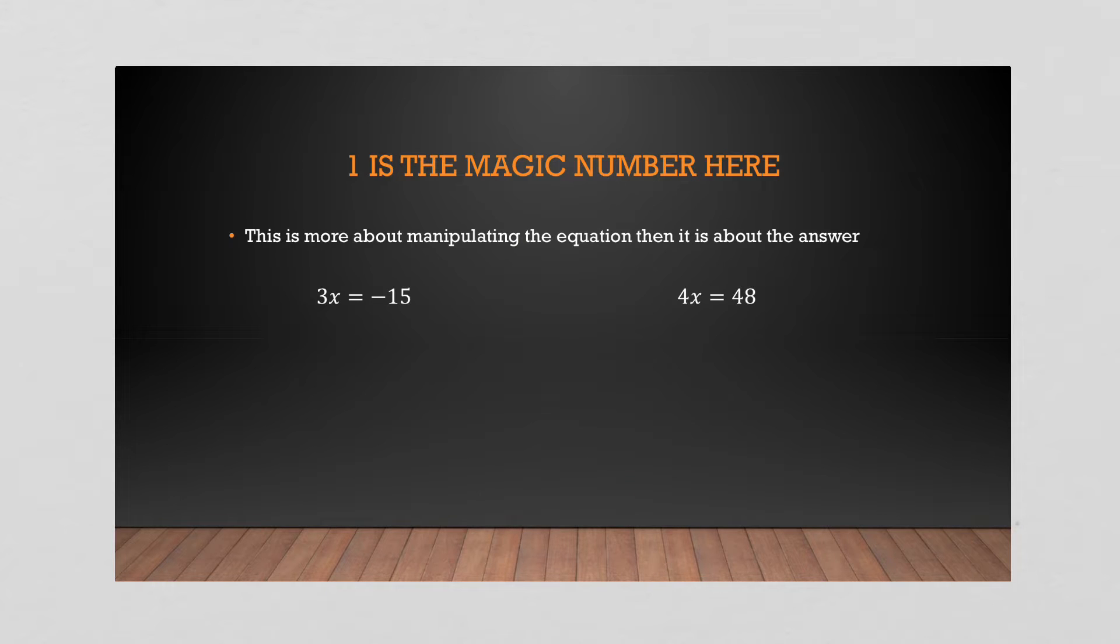Multiplication principle, similar to the addition principle where the magic number was zero. Here the magic number is one. I'm not trying to get zero anymore. Here I have three X's. I just want to know what one X is worth. So how do you get one X from three?